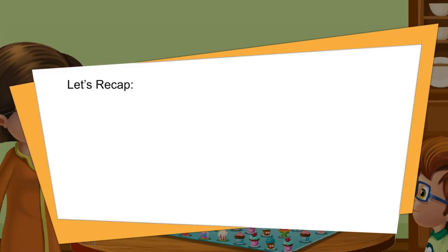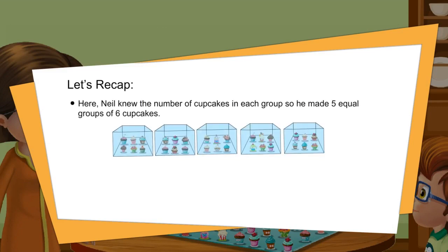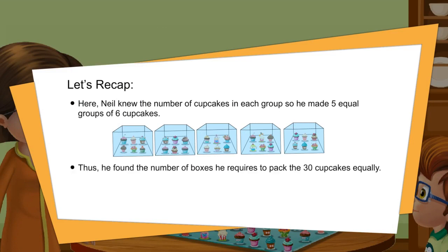Let's recap. Here, Neil knew the number of cupcakes in each group, so he made 5 equal groups of 6 cupcakes. Thus, he found the number of boxes he requires to pack the 30 cupcakes equally. Hence, he gets the division sentence: 30 divided by 6 is equal to 5.